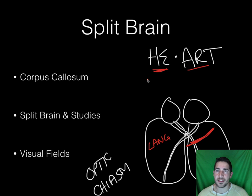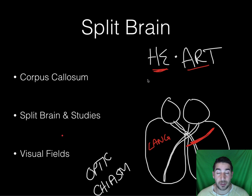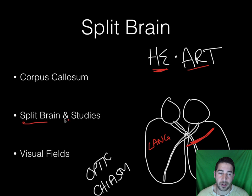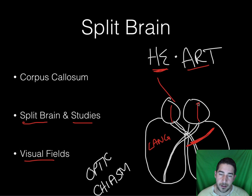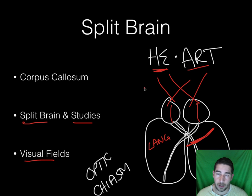There are also instances of people with severed corpus callosums who might be buttoning their shirt with their right hand and then unbuttoning it with their left, because their two sides aren't communicating with each other. It's an interesting study. As for visual fields: the right sides of each eye go to the left, and the left sides of each eye go to the right — it's not that your right eye gets everything on the left and your left eye gets everything on the right.